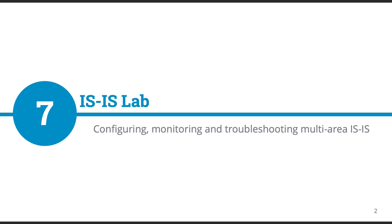We'll configure a router to participate in ISIS as an L1-L2 router, review the adjacencies, interface participation, and ISIS database. We'll also see how an ISIS speaking router will generate its own default route towards a Level 2 attached router. Finally, we'll force a common configuration mistake and see how to identify it using trace options log messages. Just like the other lab demonstration lessons, we'll be reviewing the end diagram first, then the lab instructions, and finally jump into the command line.